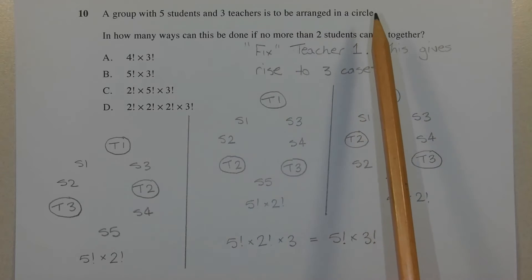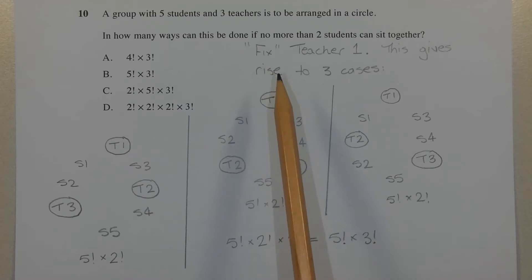We're dealing with a circular arrangement and the way I'm going to go about it is to fix one of the teachers in the first position, so I'm going to call that T1 for teacher 1, and this gives rise to three cases. So let's go through the three cases.